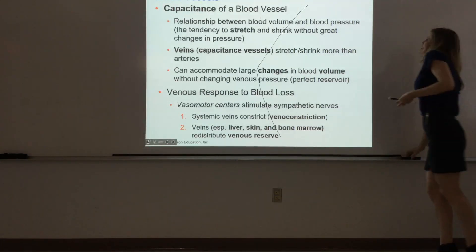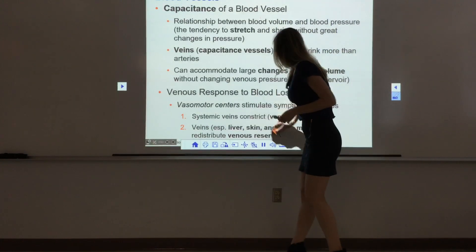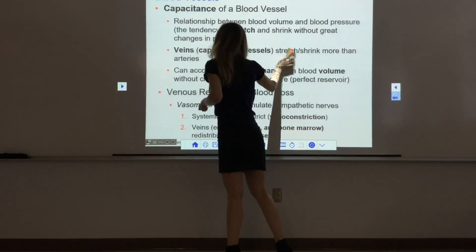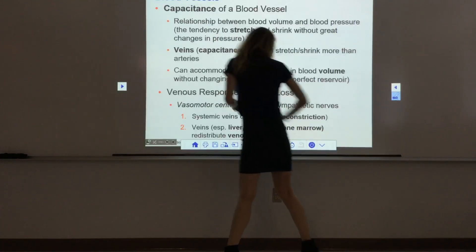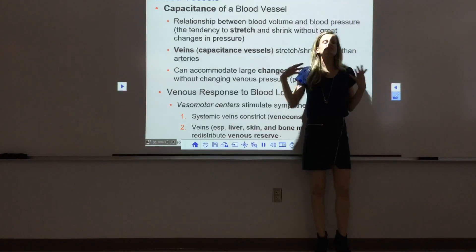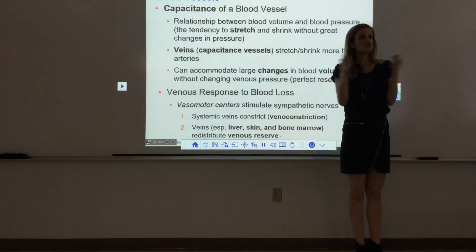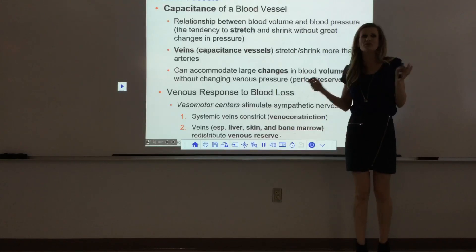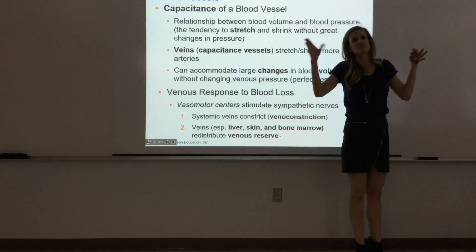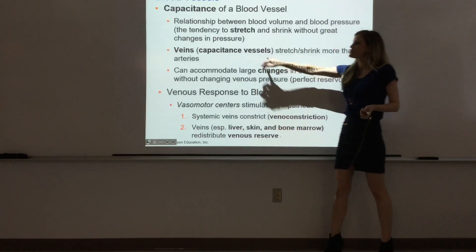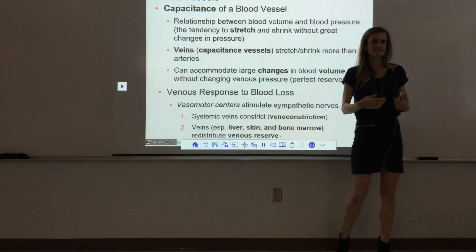The capacitance of a blood vessel describes the relationship between blood volume and blood pressure. A vessel with high capacitance can change in volume — it can change in size — without a big change in pressure. Veins are described as capacitance vessels: it's really easy for them to get bigger and smaller without needing a lot of pressure to stretch them out.